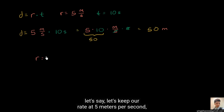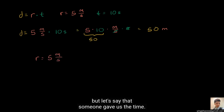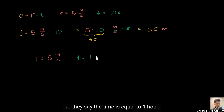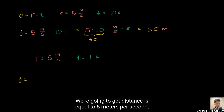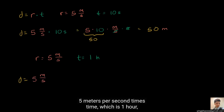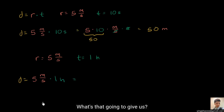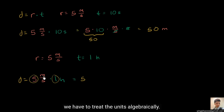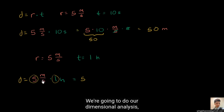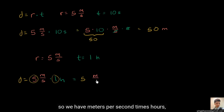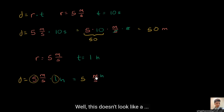But even with this, let's try a slightly more complicated example. Let's say that our rate is five meters per second, but let's say that someone gave us the time in hours instead of seconds. So they say the time is equal to one hour. So now let's try to apply this formula. We're going to get distance is equal to five meters per second times one hour. Well, the five times the one is just going to give us five, but we have to treat the units algebraically — we're going to do our dimensional analysis. So it's five meters per second times hours. You could say five meter-hours per second. Well, this isn't a set of units that makes sense to us — this doesn't feel like our traditional units of distance.